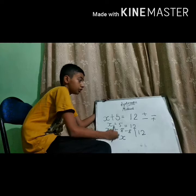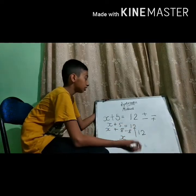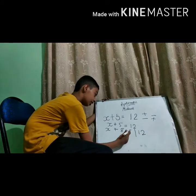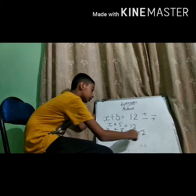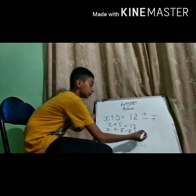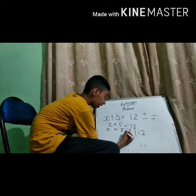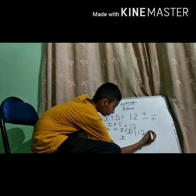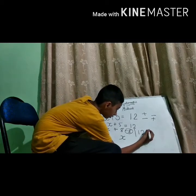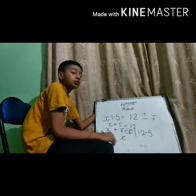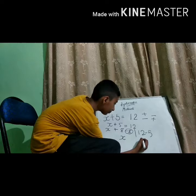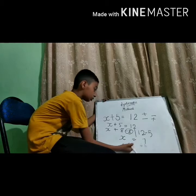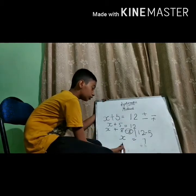As I told you, the systematic method is also known as the balancing method — we need to balance here. What activity we have done on one side, we need to do on the other side also. So we have minus 5, and we need to balance the other side also with minus 5. So here x is left only, and here 7. So the value of x will be 7.